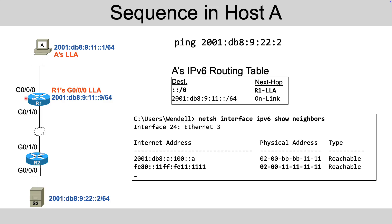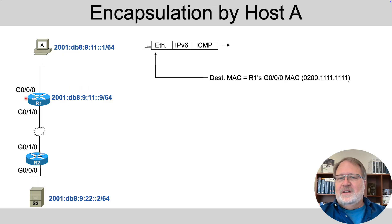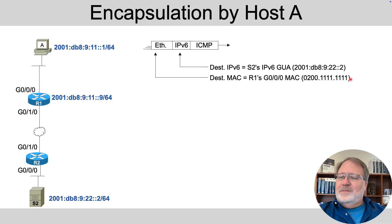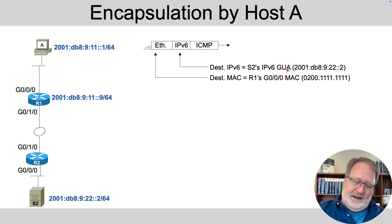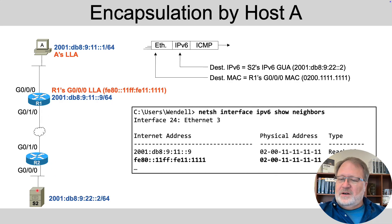That's part of the reason for this neighbor table logic, because the route says send to R1's link local address. Host A then says that's my next-hop address — let me find its MAC address. That's the MAC address used when encapsulating the packet to send it from host A down to the router. The encapsulation by host A uses the MAC address of R1 based on the correlating neighbor table entry based on its link local address. Looking at host A's neighbor table, we see that entry — R1's link local address and the corresponding MAC address used to forward this frame.